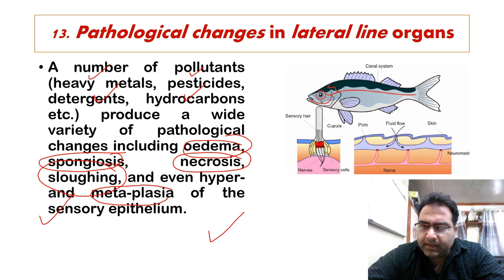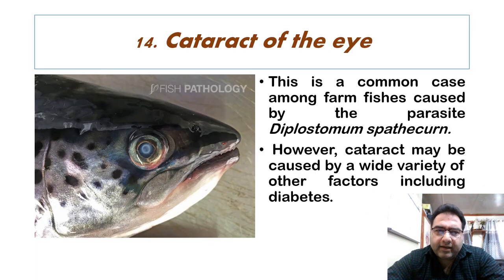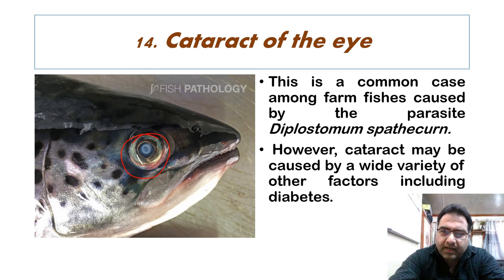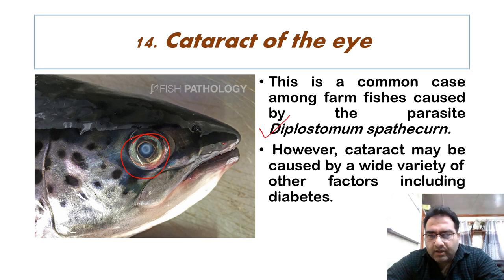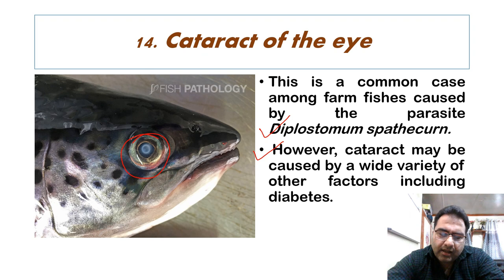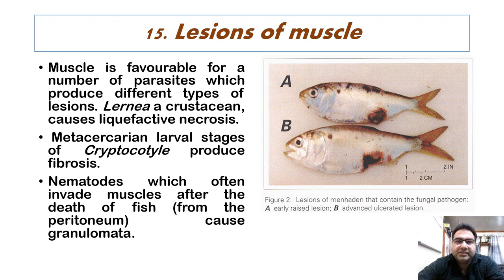Cataract of the eye is also an important feature. This is a common condition visible even from a distance — the fish eye is not shiny but appears murky. This condition occurs among farmed fishes and is caused by the parasite Diplostomum spathaceum. However, cataract may also be caused by a variety of other factors including diabetes in fish.